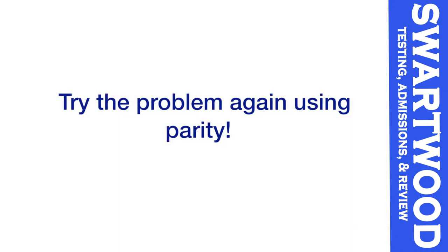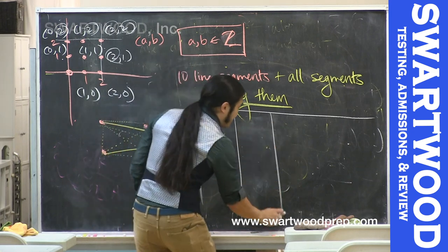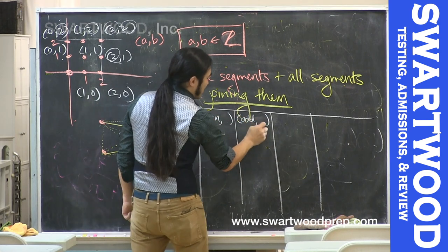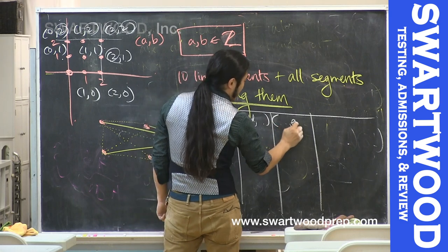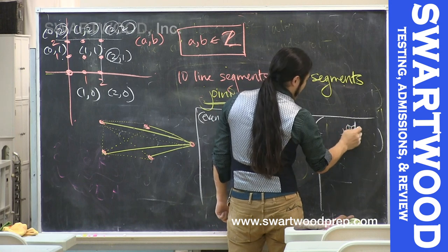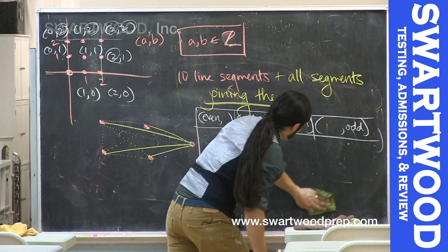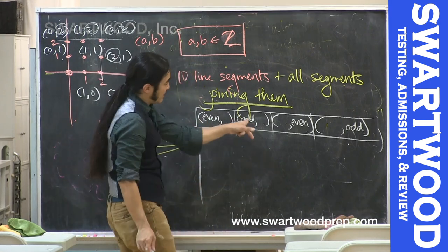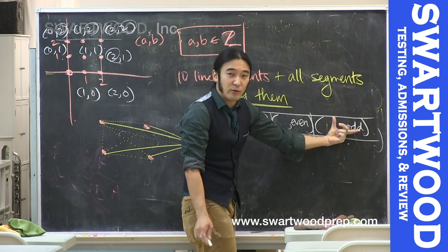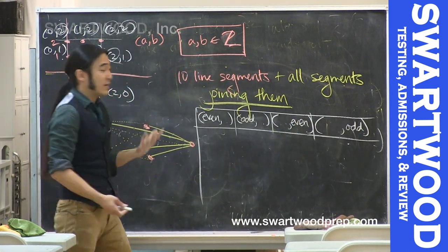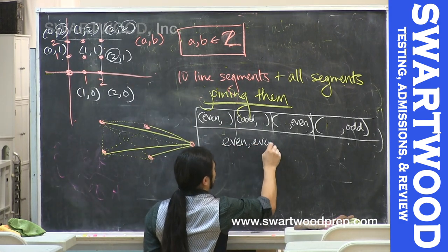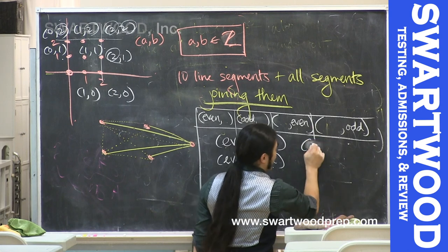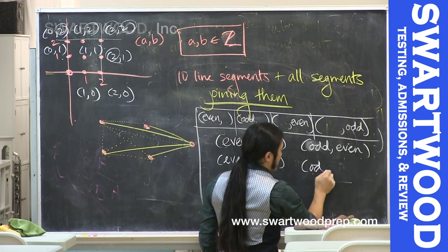What I'm going to do is group the points into different classes based on parity. The x-coordinate can be even or odd, and the y-coordinate can be even or odd. How many different cases can we get? There are two choices for x and two choices for y, so two times two gives four possibilities: even-even, even-odd, odd-even, and odd-odd.